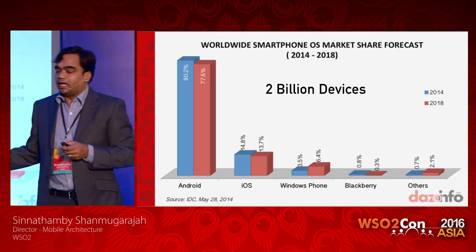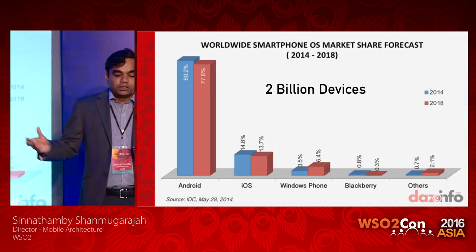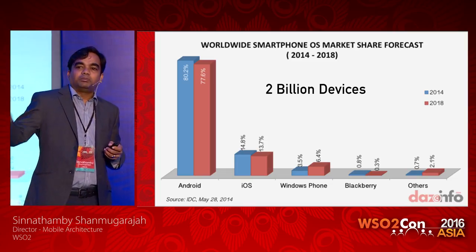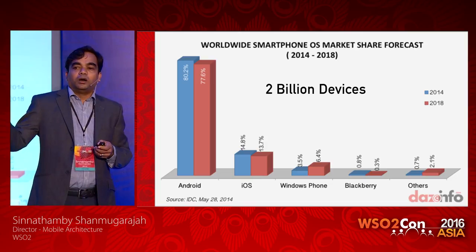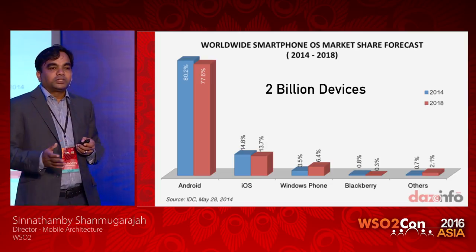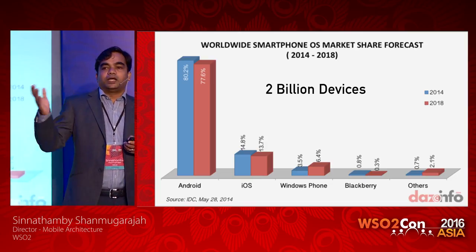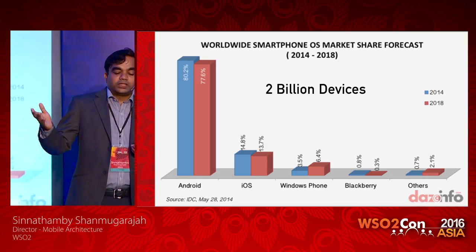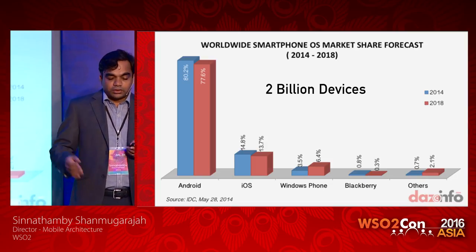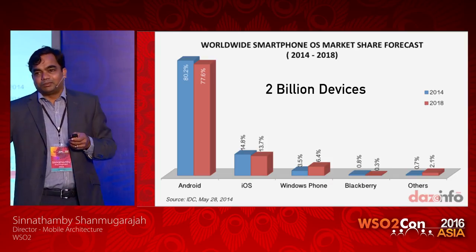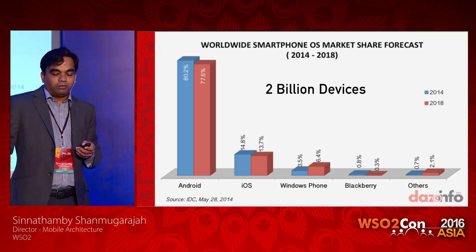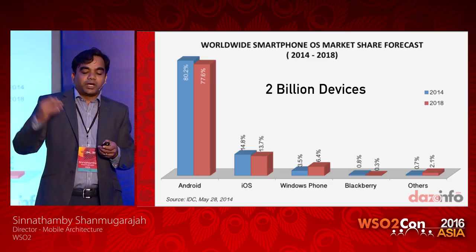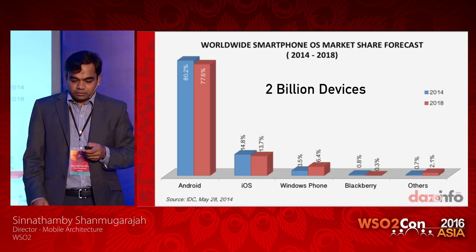If you look at the phone market share, it has surpassed 2 billion mobile devices as of now. Android is almost 80%, iOS 14%, and Windows 3.5%. BlackBerry is dying, and others have a very small percentage. So if you look at Android combined, it is almost about 95%.